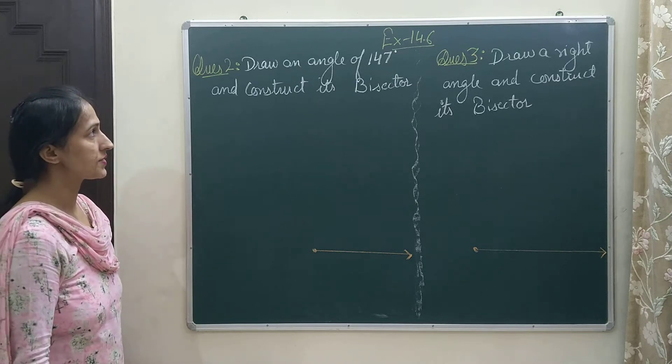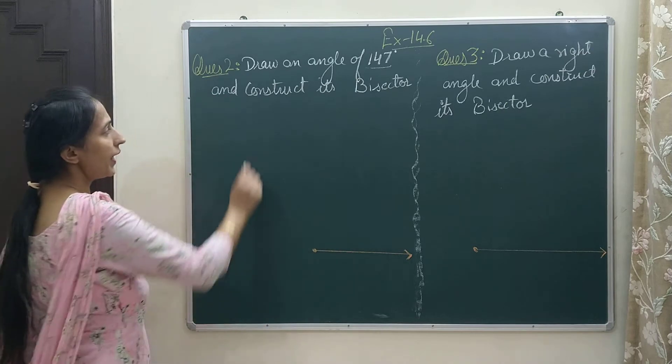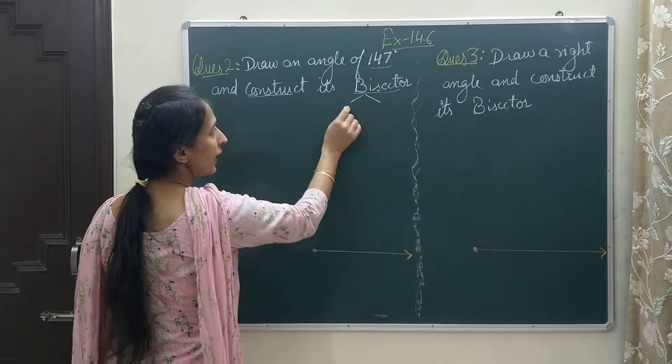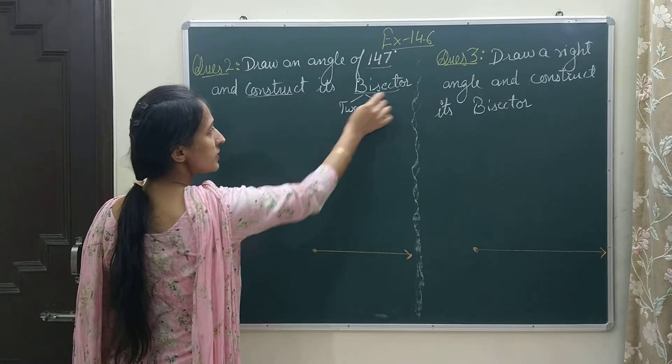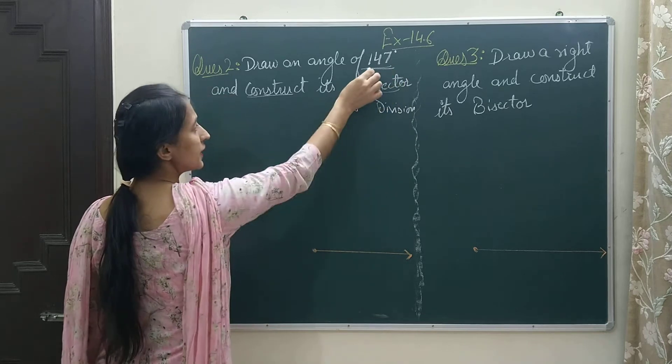Here we are asked to draw a 147-degree angle and construct its bisector. As I have told you, bisector means two and sector means division, so I am going to divide this 147-degree angle into two equal parts.